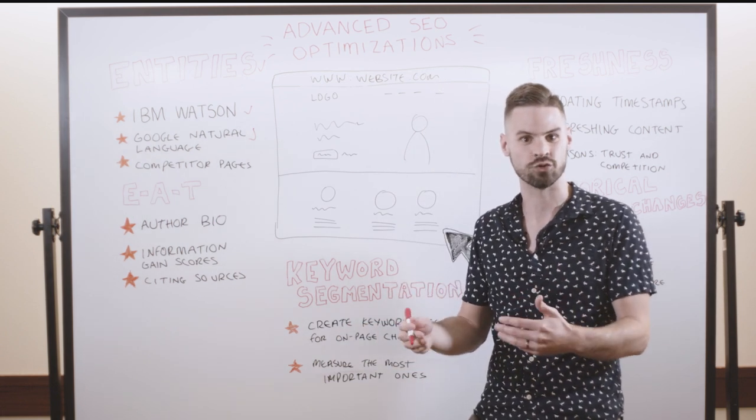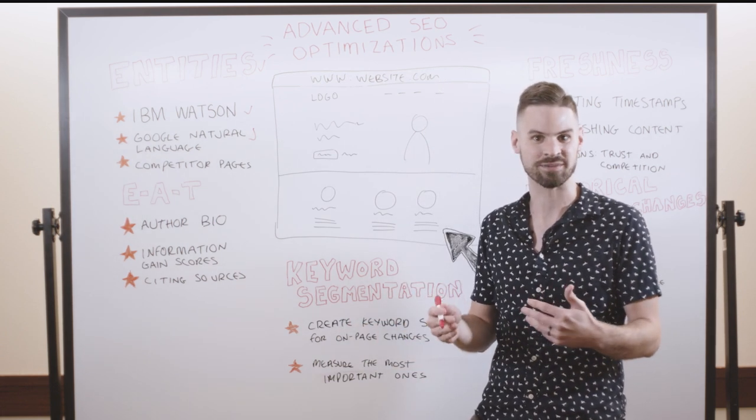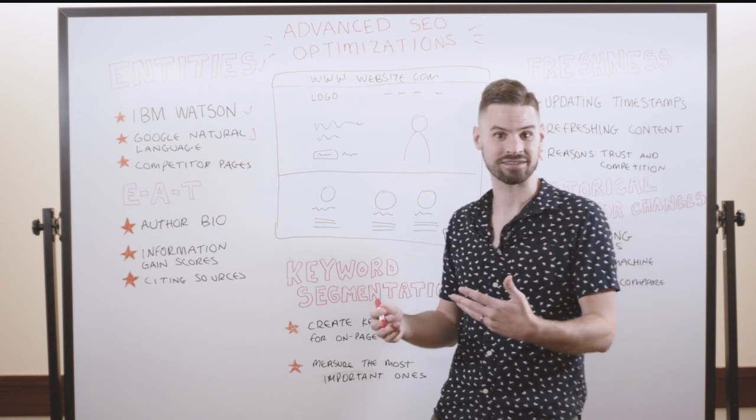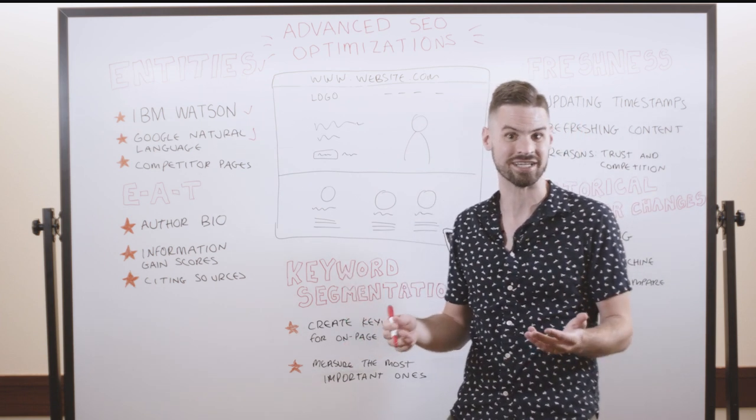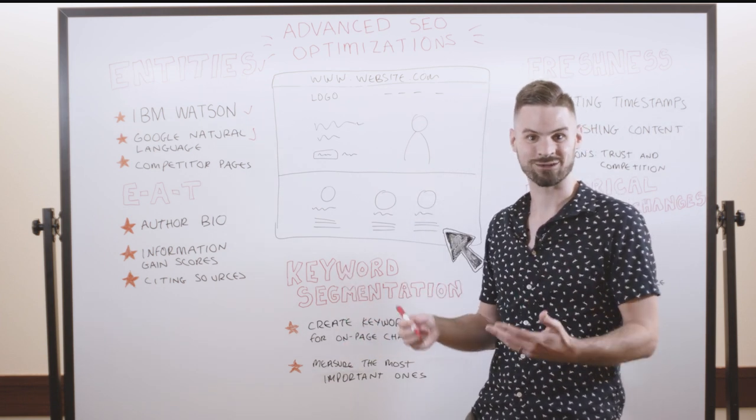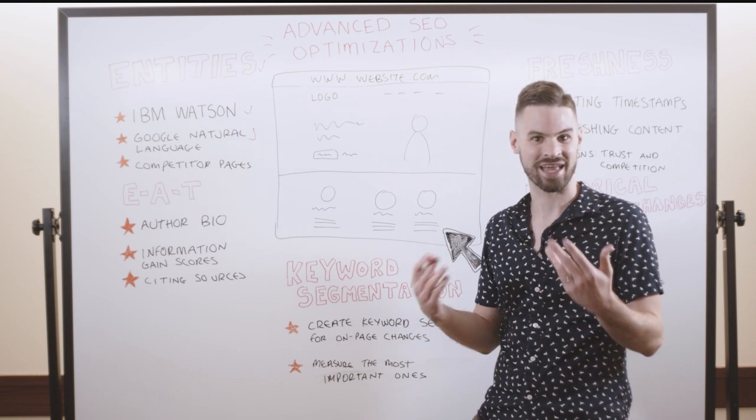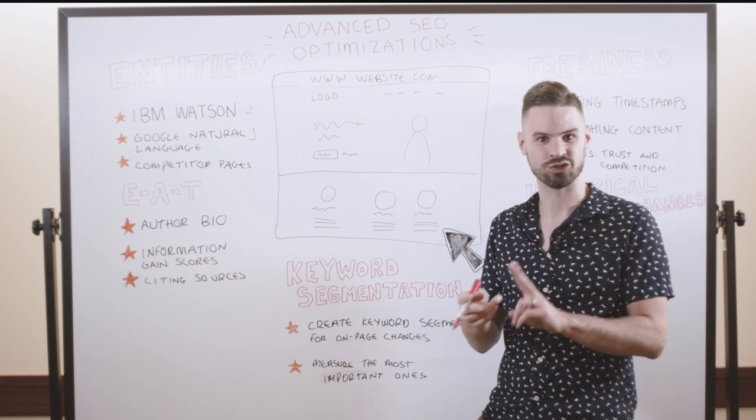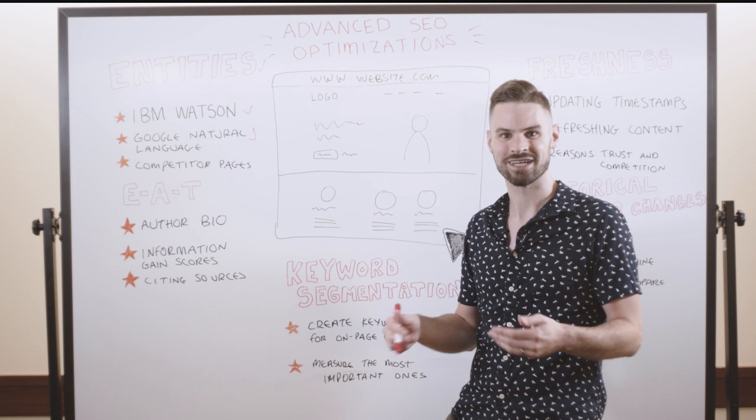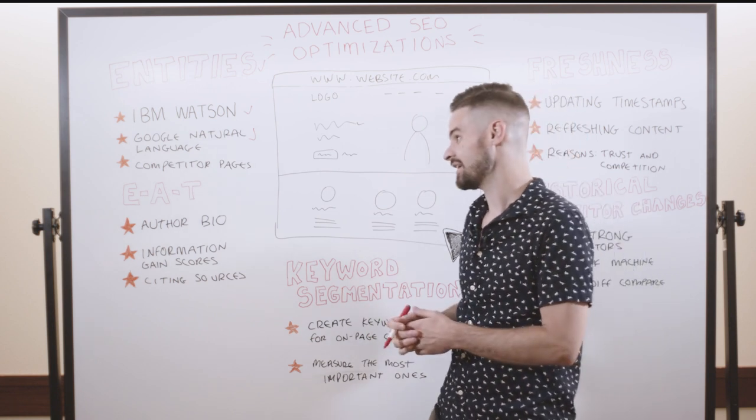Both of those have public-facing tools that you can run any text document you want through. And if you ran it from a result like Investopedia, you might see that retire early comes up with entities such as Vicki Robin and Joe Dominguez, two of the top authors about retire early.